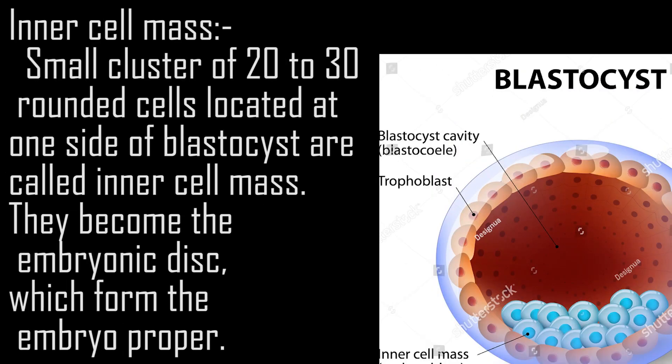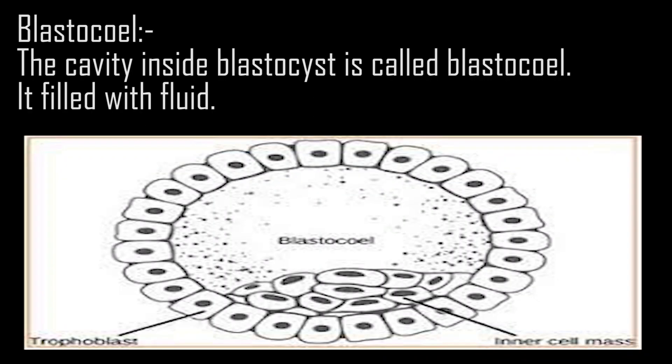Inner cell mass: A small cluster of 20 to 30 rounded cells located at one side of the blastocyst is called the inner cell mass. These cells become the embryonic disc, which forms the embryo proper. Blastocoel: The cavity inside the blastocyst is called the blastocoel, and it is filled with fluid.